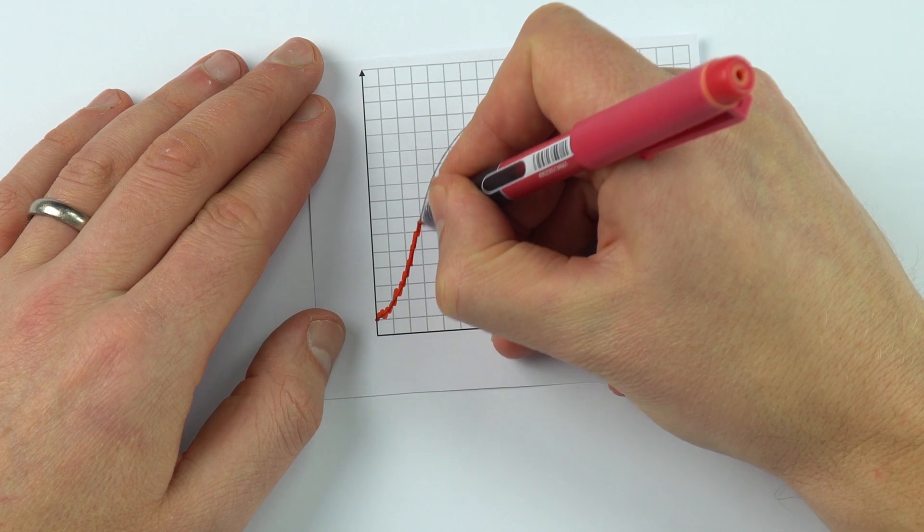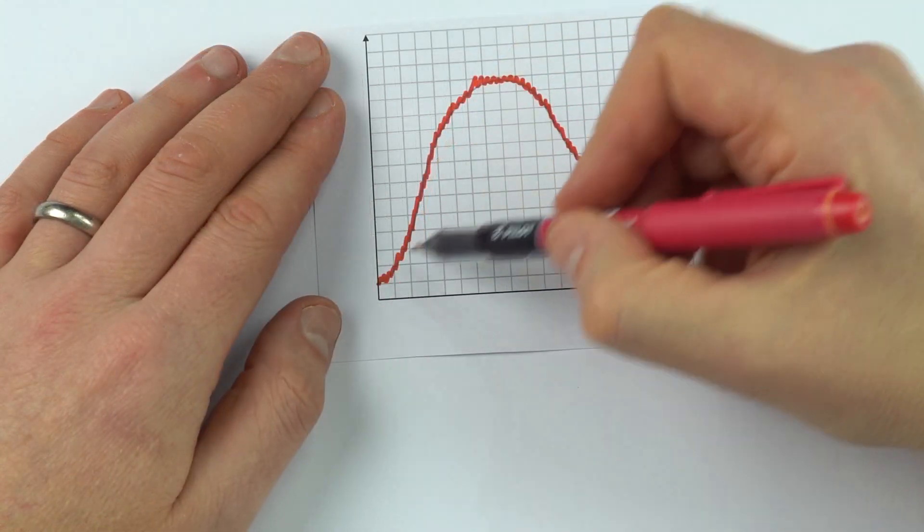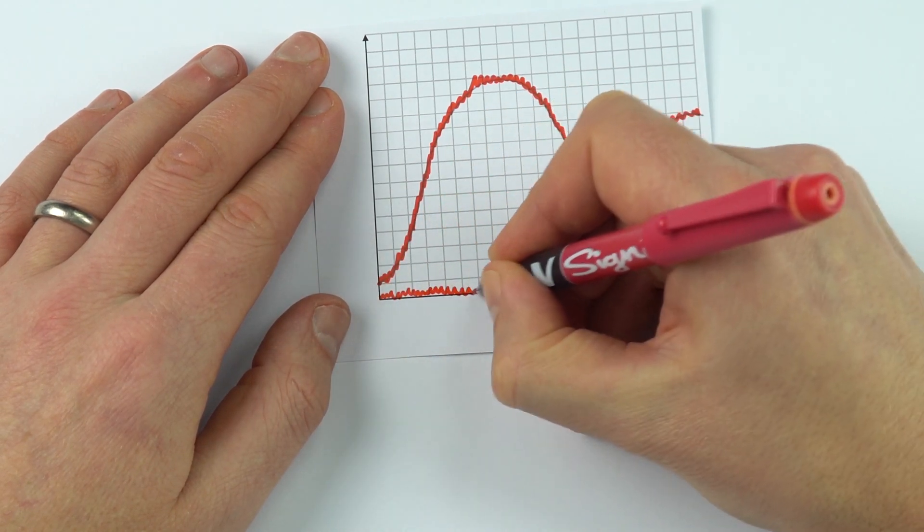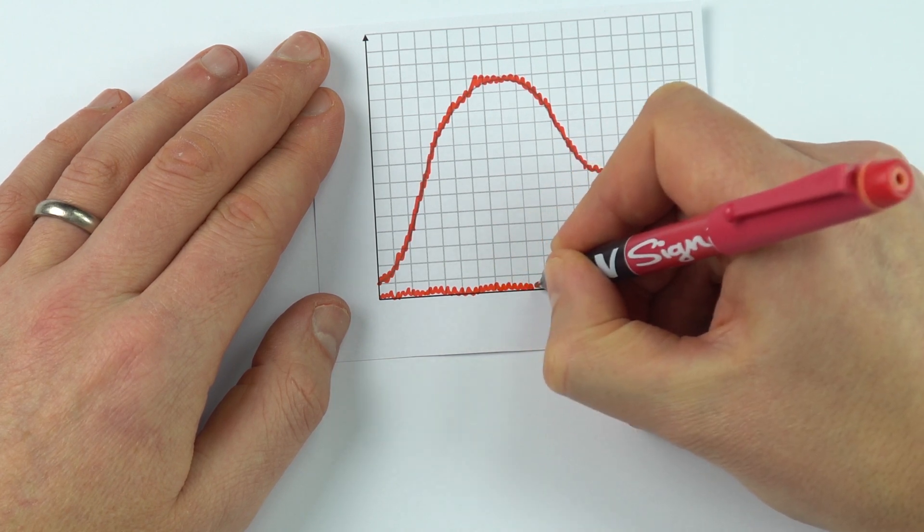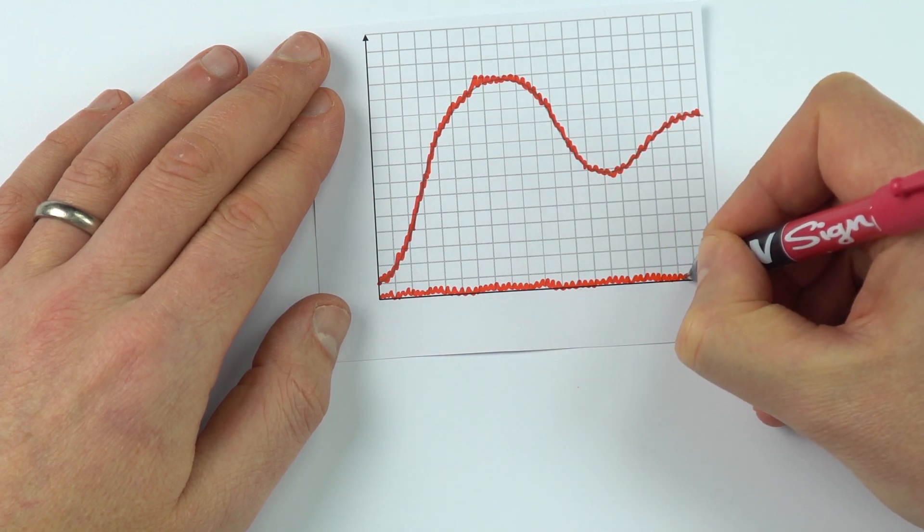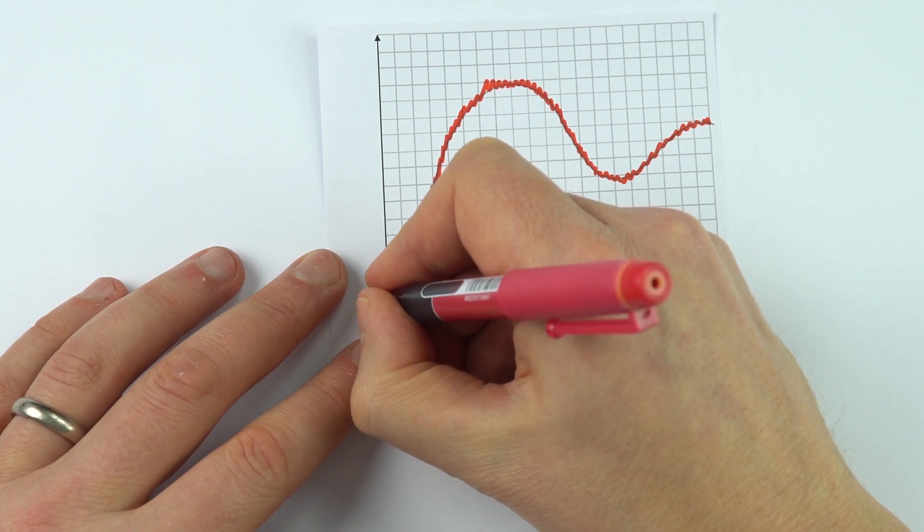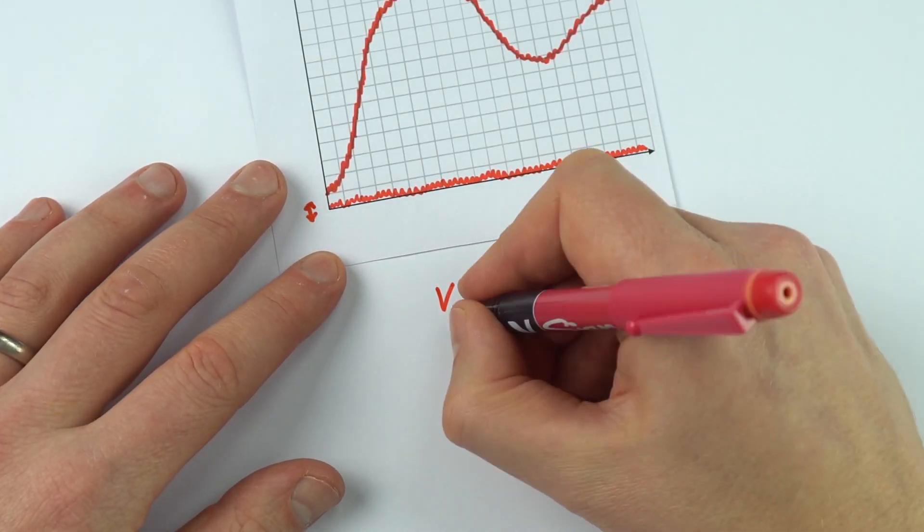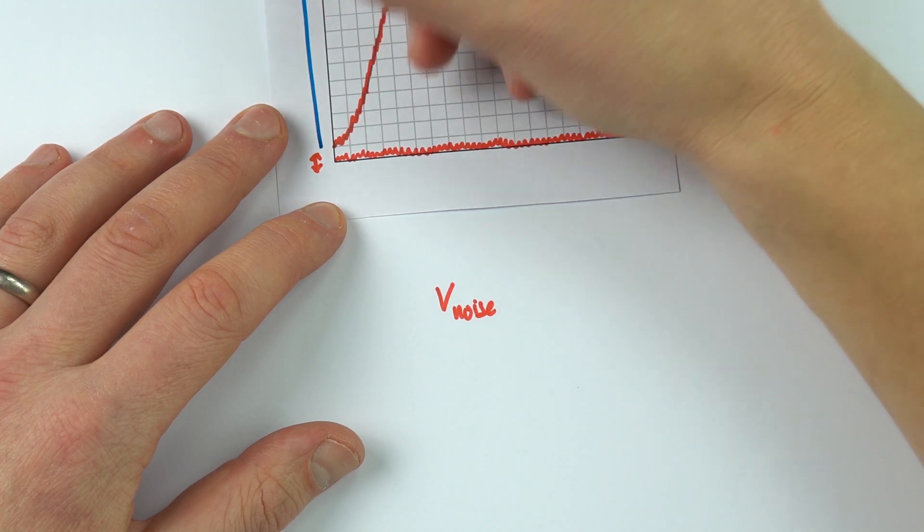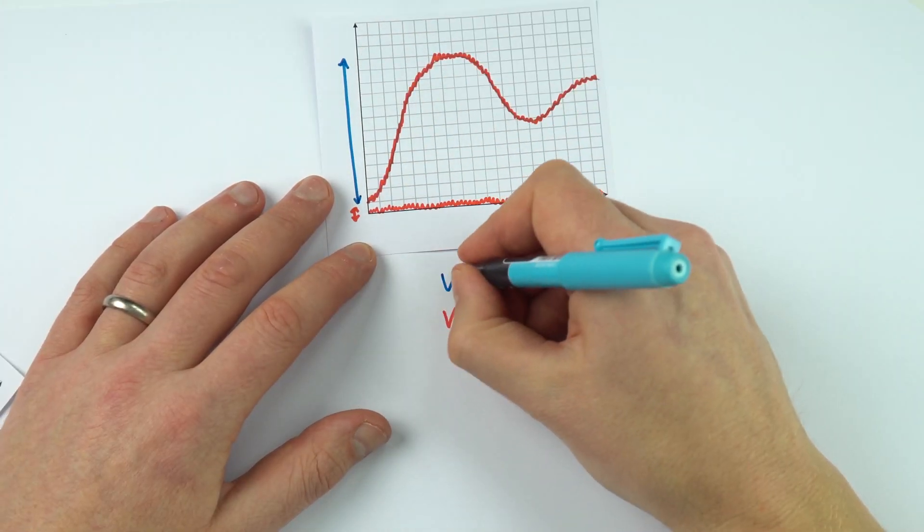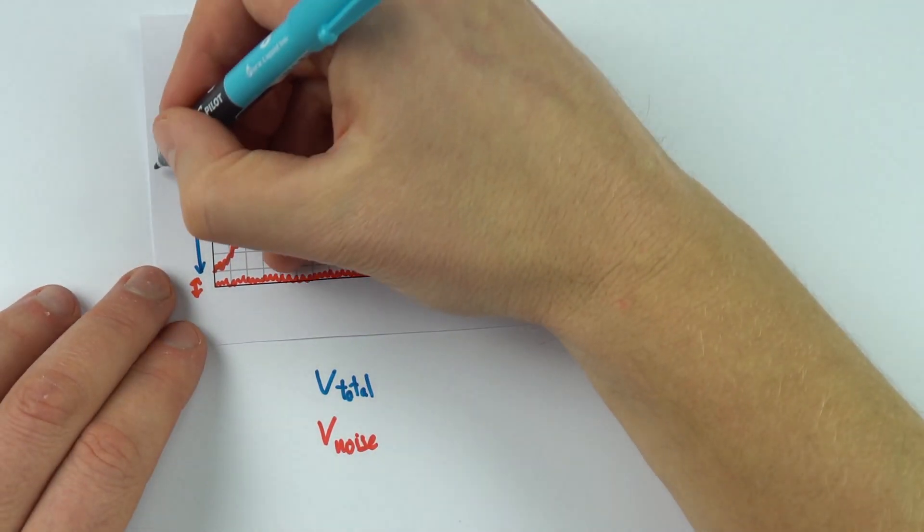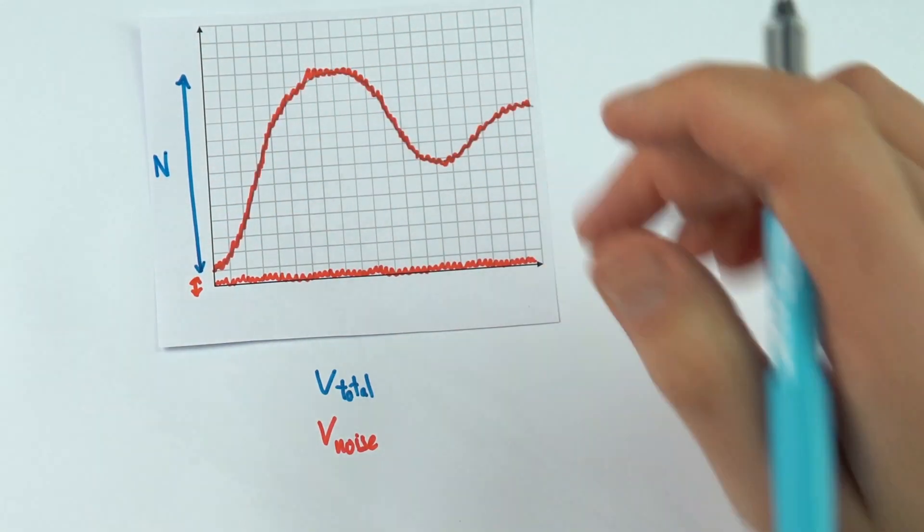Perhaps this was our original signal. When we have noise what we might see is something that looks a bit like this. If we were to separate the noise from the original signal what we might see is that the noise is some kind of variation like this, a bit like the static that you might see on the TV. This distance down here is the signal we get from the noise and we can see how big that is compared to the total signal which I'm going to call V total.